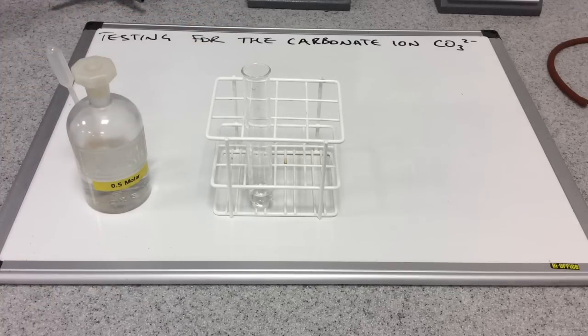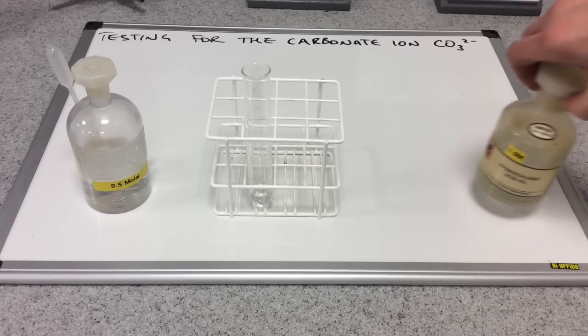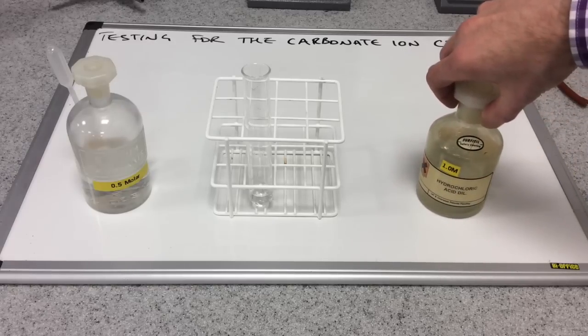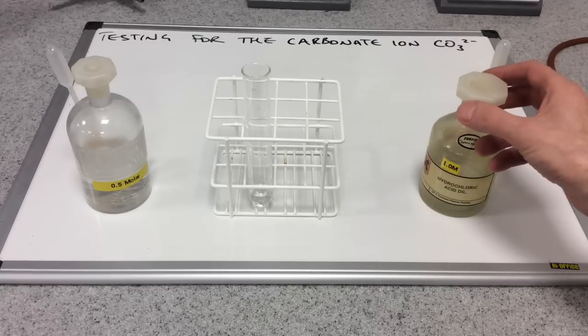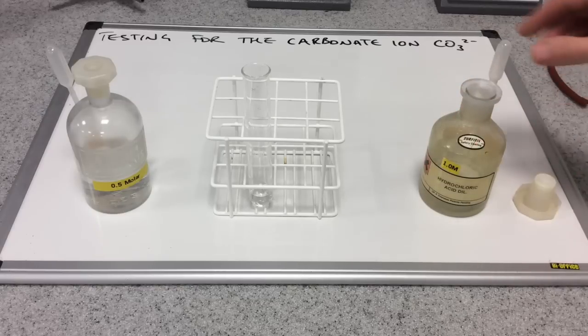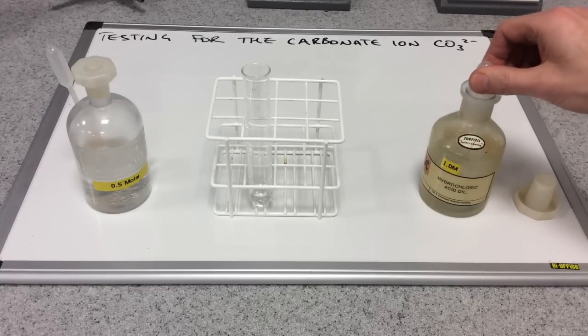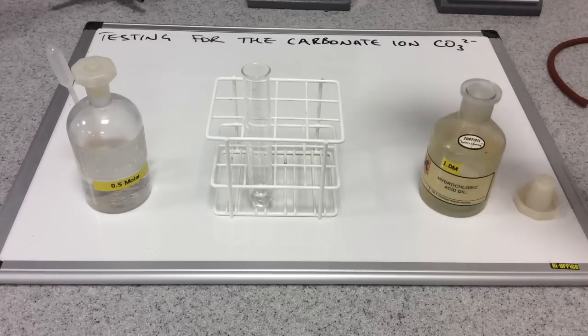And what I'm going to do is I'm going to add to that some acid. And the acid I'm going to use is dilute hydrochloric acid. So we'll just put a pipette full of the acid into the carbonate solution. And we'll see what happens.